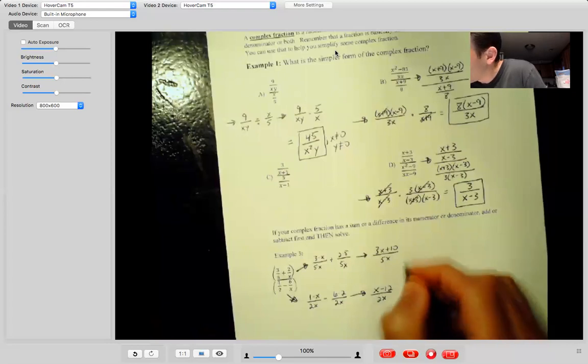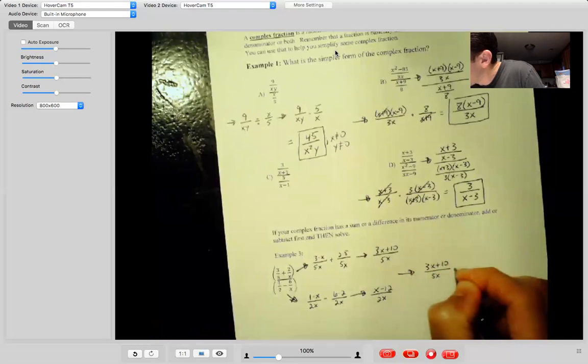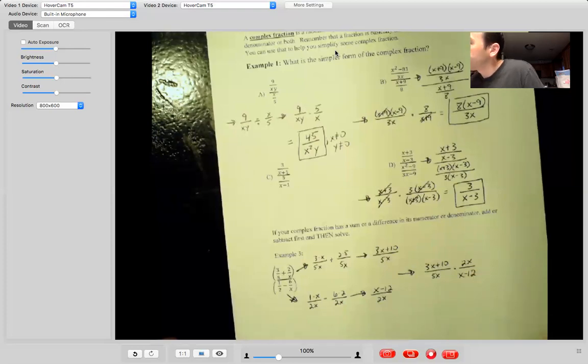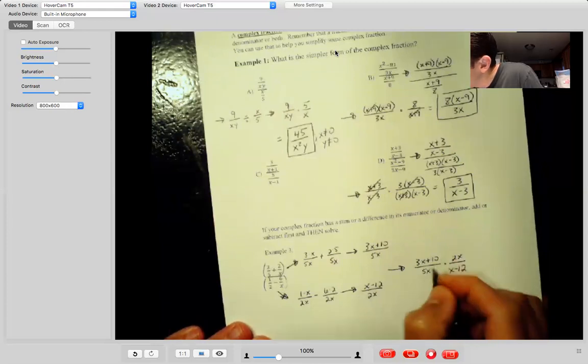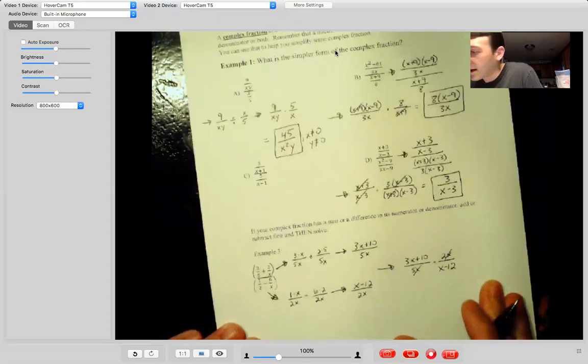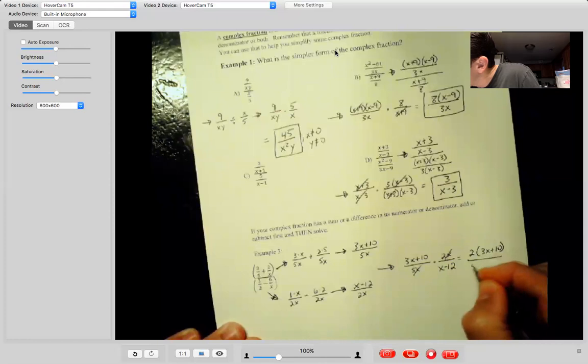So we'll go ahead. Go three X plus 10 over five X times, remember we're multiplying by the reciprocal. So two X over X minus 12. You can go ahead and cancel out these two X's. Divide both of these by X and you get five and two. And nothing else really factors out. So we have two times the quantity three X plus 10 over five times the quantity X minus 12.